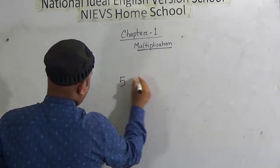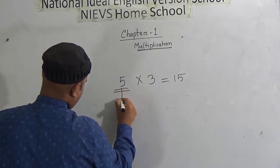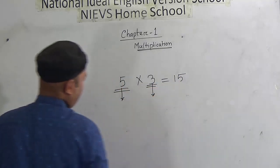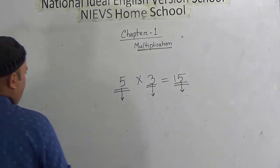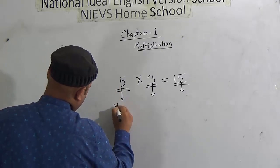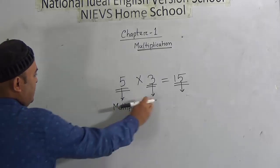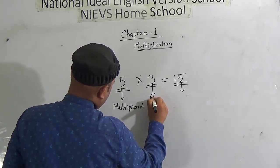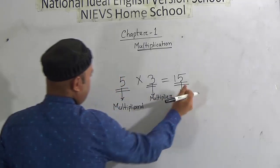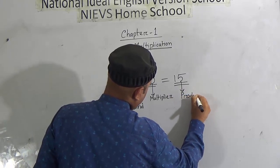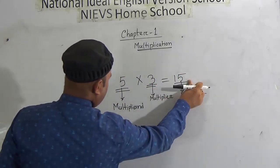Now look here: in the expression 5 multiplied by 3 equals 15, each part has a specific name. This first number, 5, is called the multiplicand. The second number, 3, is called the multiplier. And the result, 15, is called the product. So 5 is the multiplicand, 3 is the multiplier, and 15 is the product.